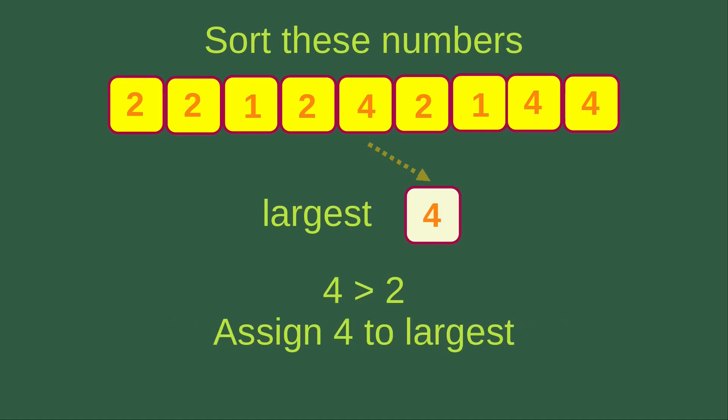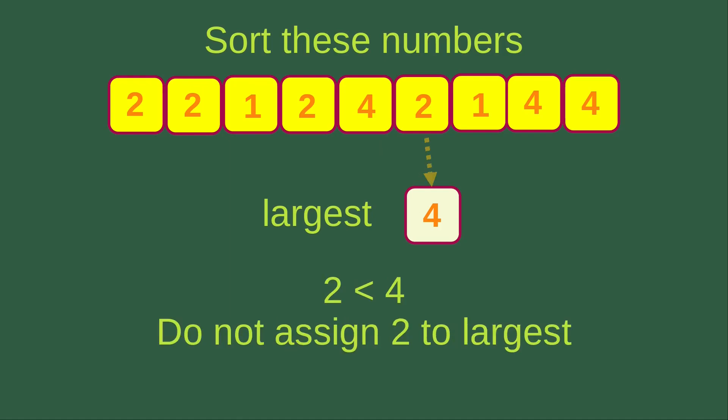Now I check four, and I see that four is larger than two. That means I can assign that number to the largest variable, so the largest variable becomes four rather than two. Now I check another number in the unsorted list, which is two. Since two is smaller than four, I don't have to do the assignment to the largest variable, so that variable remains at four.